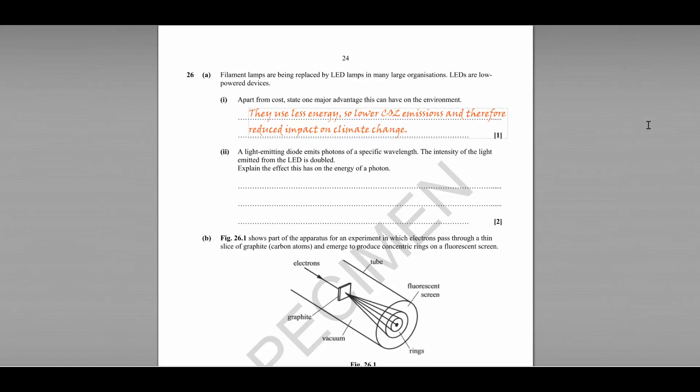The intensity of the light emitted from the LED is doubled. What effect will this have on the energy of a photon? We know that the equation for the energy of the photon is energy E equals the Planck constant H multiplied by the frequency F. Therefore, intensity has no effect on the energy of individual photons because photon energy is related only to the frequency.